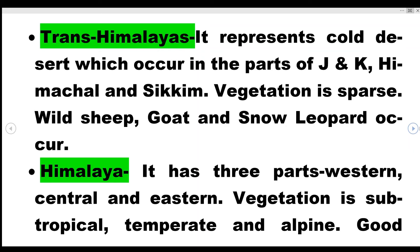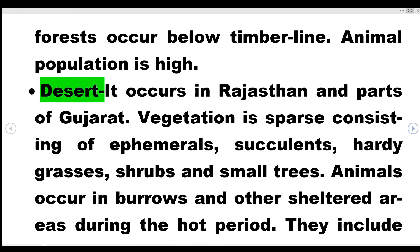The Himalaya region has three parts: western, central, and eastern. Vegetation is sub-tropical, temperate, and alpine. Good forests occur below the timberline. Animal population is also high in this region.